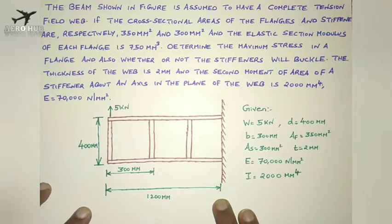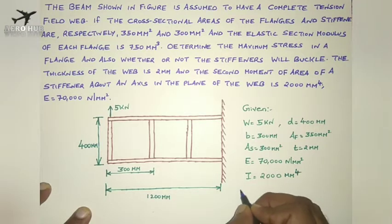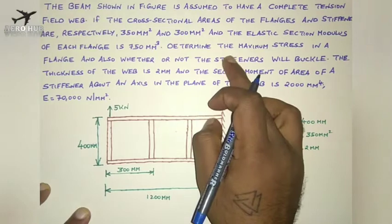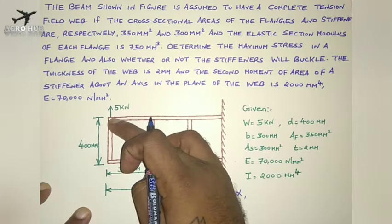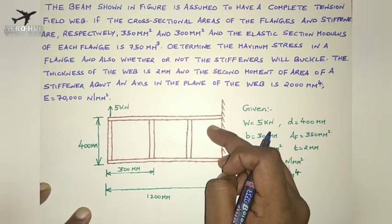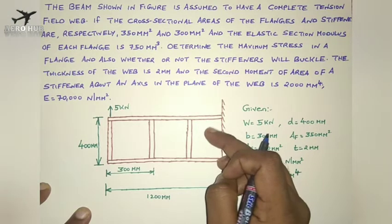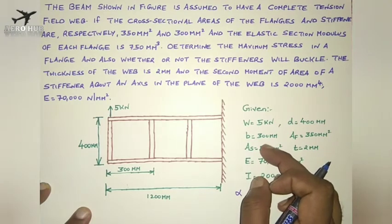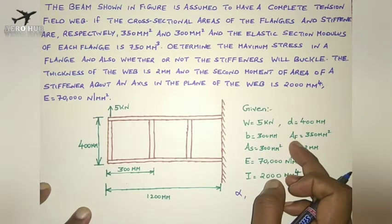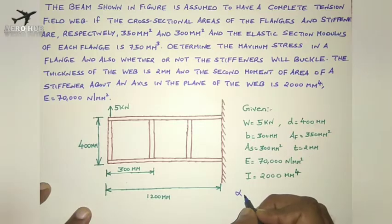If the compressive load is more than the critical load, then the stiffeners will buckle. First of all, we have to find out the value of alpha, which is the angle of diagonal tension. Then we have to find out the maximum stress acting in the flange. Since the load is applied at the top flange, the maximum stress will be acting on the top flange. I will estimate the force acting on the top flange, then divide it by the area of the flange to get the stress.